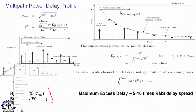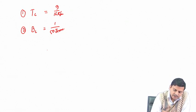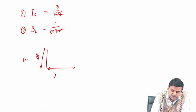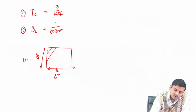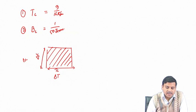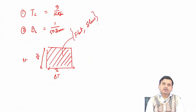Once one calculates τ_RMS, one can calculate the coherence bandwidth. So we have coherence time T_c = 9/(16π·F_m) and coherence bandwidth B_c = 1/(50·τ_RMS). B_c gives the range of frequencies over which the channel is not fluctuating, and T_c gives the time duration over which the channel is not fluctuating. If we take a time-frequency grid contained within B_c and T_c, we are looking at a portion of time-frequency that is flat in frequency and slow in time.